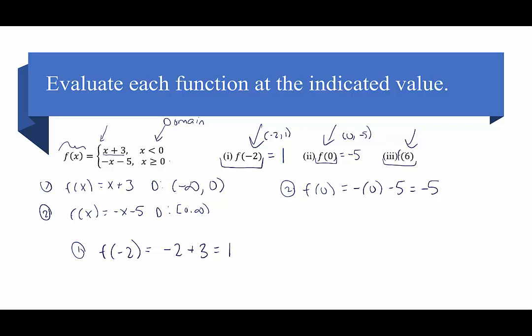Now let's evaluate f of 6. Where does 6 fall in our domain? It's not less than 0 — it is greater than or equal to 0, so we plug it into the second piece. f of 6 equals negative 6 minus 5, which is negative 11. So we have the ordered pair 6 comma negative 11.